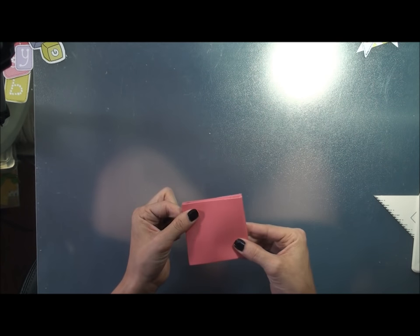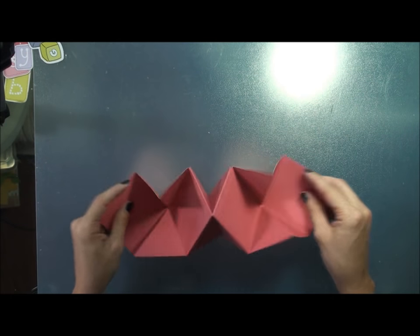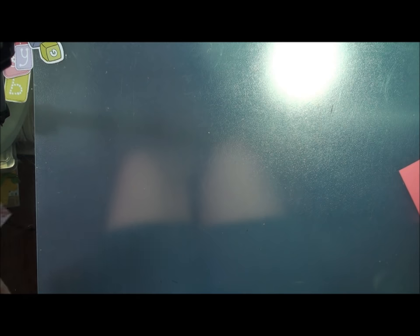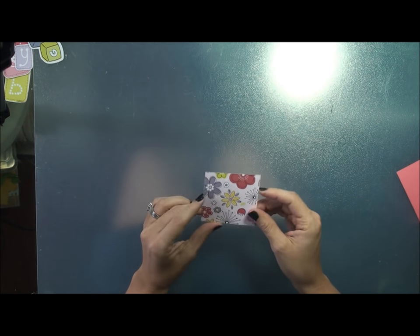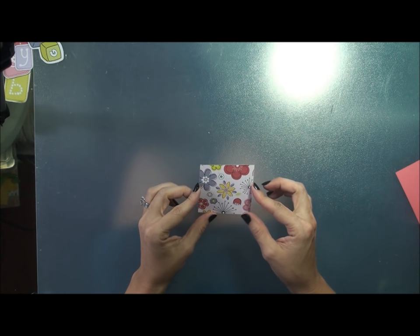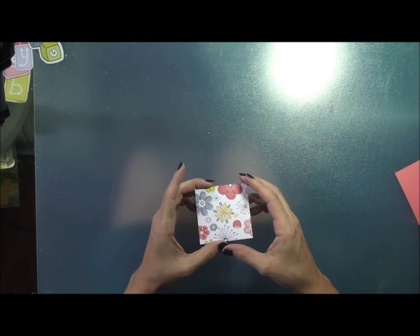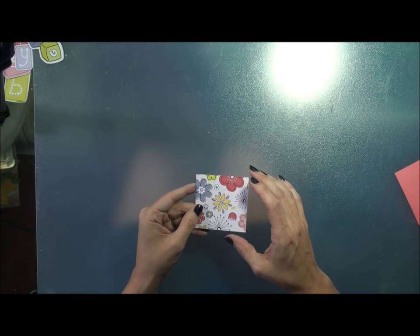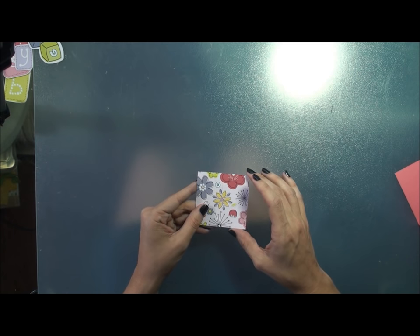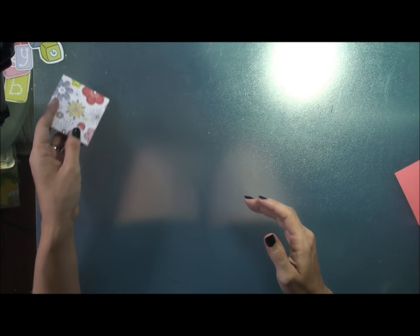Okay so now it's time to start decorating. So what you first want to do is you actually want to cut six 2 and 3/4 by 2 and 3/4 inch squares. Okay and these are what you will use to actually decorate the little triangles that you have on your mini album. Once you cut them into 2 and 3/4 by 2 and 3/4 squares you'll actually cut them diagonally.